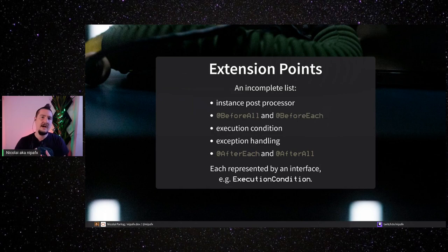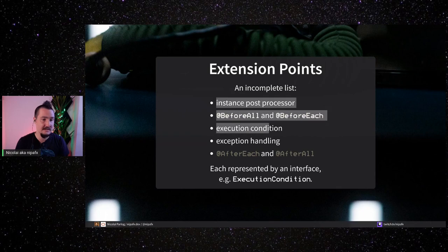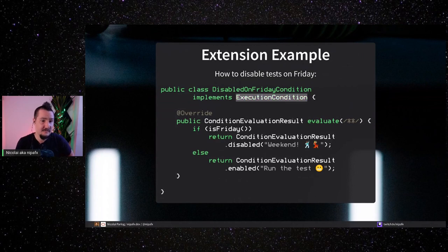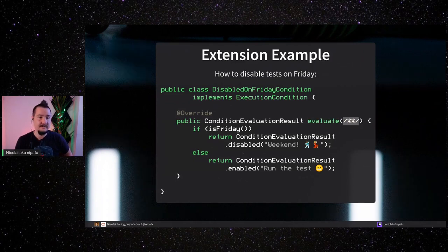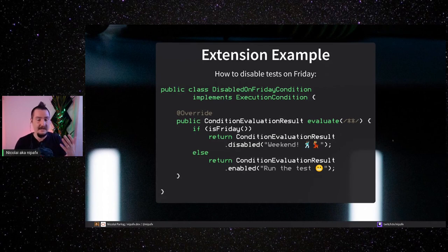Let's look at the execution condition extension point, which deals with whether a test should be executed or not. There's an interface called ExecutionCondition — implementing it is fairly straightforward. You implement the interface and implement one method: an evaluate method. You get some parameters and, since we want to disable on Friday, we just check whether it's Friday. If it is, we return ConditionEvaluationResult.disabled and the test will be disabled; otherwise we return enabled and the test is enabled. That's it — one of the simplest extensions you can write, and it works like a charm.